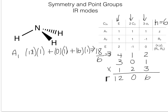We do the same thing for A2: one times twelve, plus one times zero, plus negative one times six equals six. Dividing by six gives one A2 representation.